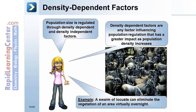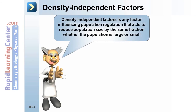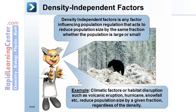For example, a swarm of locusts can eliminate the vegetation of an area virtually overnight. Density independent factors are any factors influencing population regulation that act to reduce population size by the same fraction whether the population is large or small. Examples include climatic factors or habitat disruptions such as volcanic eruptions, hurricanes, or snowfall, which reduce population size by a given fraction regardless of population density.